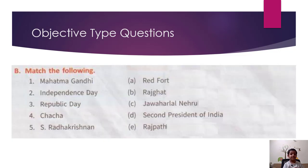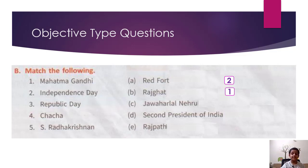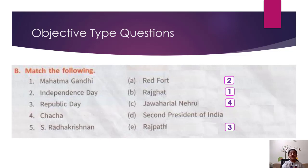D: Match the following. Question 1: Mahatma Gandhi — the answer is Rajghat. Question 2: Independence Day — it is celebrated at Red Fort. Question 3: Republic Day — we celebrate it at Rajpath, so the answer is Rajpath. Question 4: Chacha — children call Chacha for Jawaharlal Nehru, so the answer is Jawaharlal Nehru. Question 5: Radhakrishnan — he is the second president of India, so the answer is second president of India.